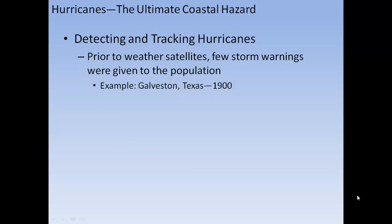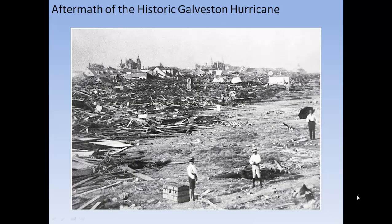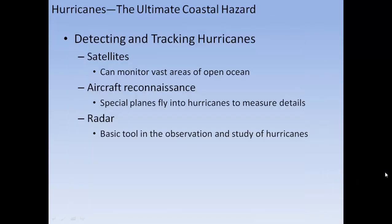Prior to weather satellites, few storm warnings were given. For example, Galveston, Texas in 1900 had no warning before a devastating hurricane struck. Today, satellites can monitor vast areas of open ocean, special aircraft fly into hurricanes to measure details, and radar is a basic tool for observation and study of hurricanes.